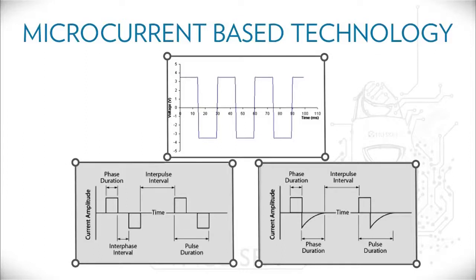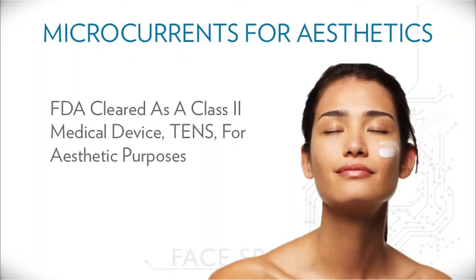In the center, you see a square waveform. On the lower left, you see a square waveform with pauses between the current levels and polarities. On the right, you'll see gentle transitions between various current levels. These characteristics can be put to use — for example, microcurrents for aesthetic purposes. An example would be Nu Skin's Facial Spa. This is an FDA-cleared, Class II medical device, a TENS, for aesthetic purposes.